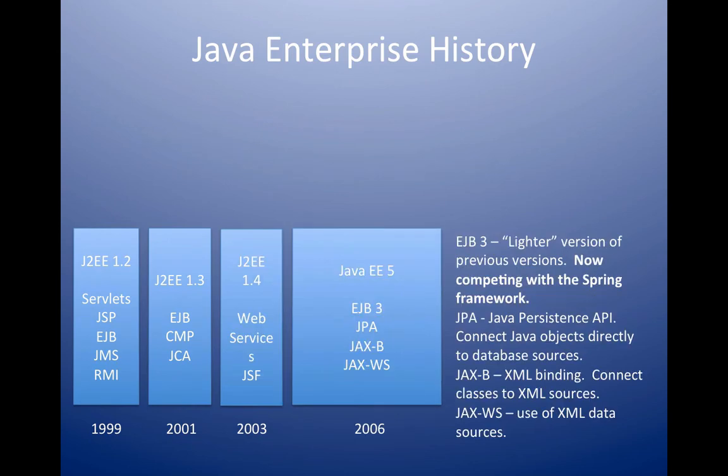In 2006, we got a version 5 upgrade, and the name changed because of new competition called the Spring Framework, which has probably become more popular today than the original enterprise Java.